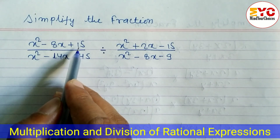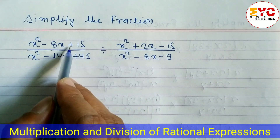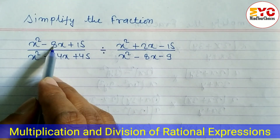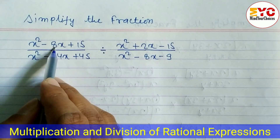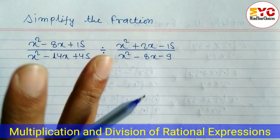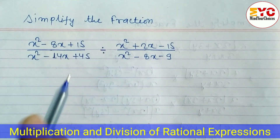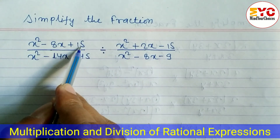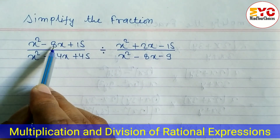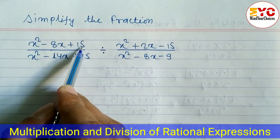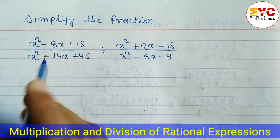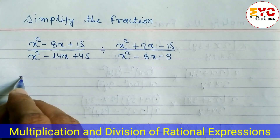We have to factorize while multiplying 15 and while adding 8. We need to find two factors whose multiplication is 15 and addition is 8. The factors are 5 and 3: 5 × 3 = 15 and 5 + 3 = 8.